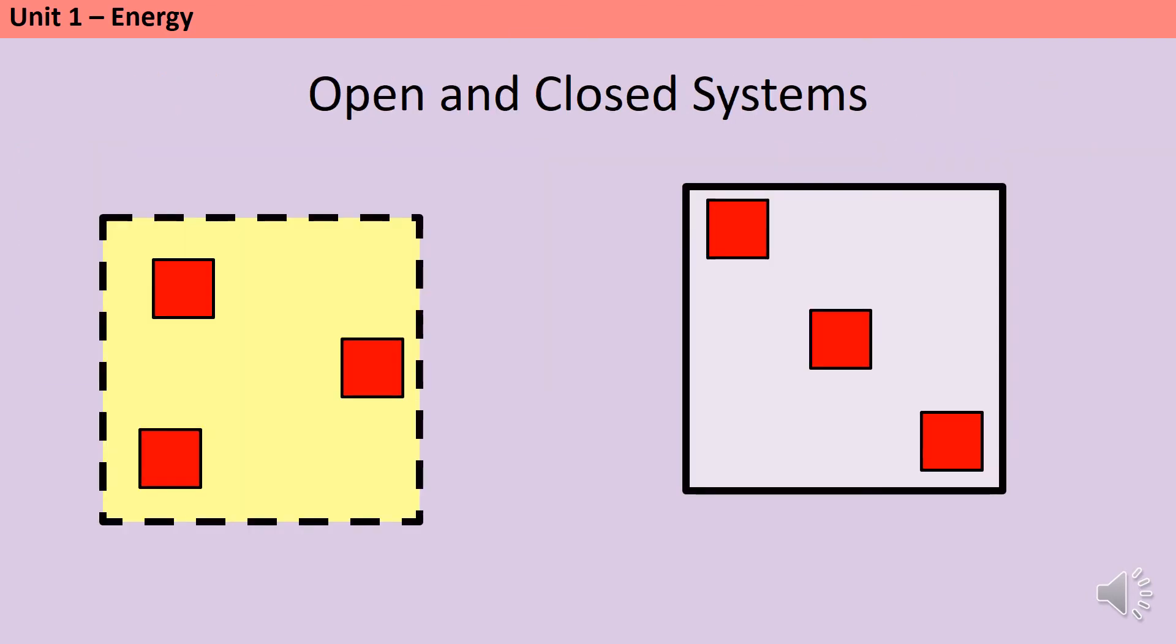Now, our next definition for the energy topic includes the phrase 'in a closed system.' So let's briefly discuss what this means, as closed systems are important for explaining energy and momentum, and even why chemical symbol equations balance.